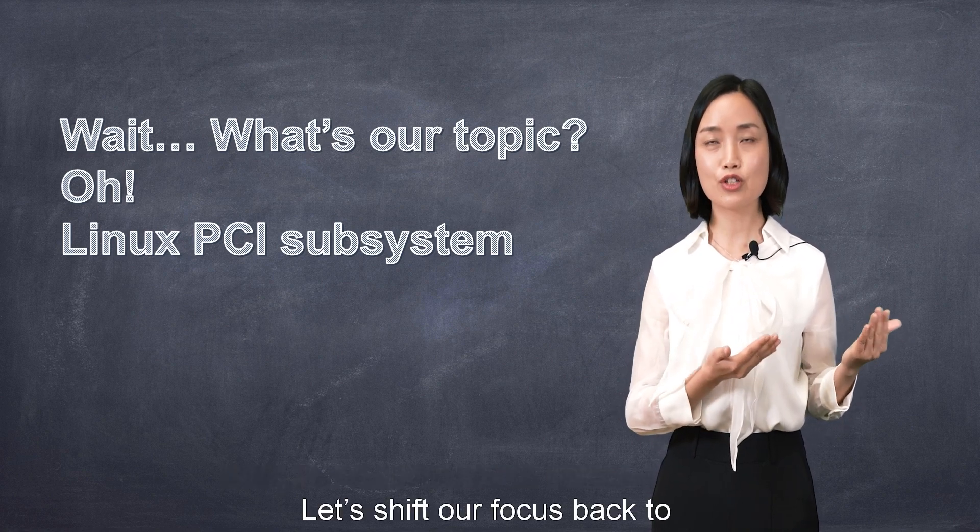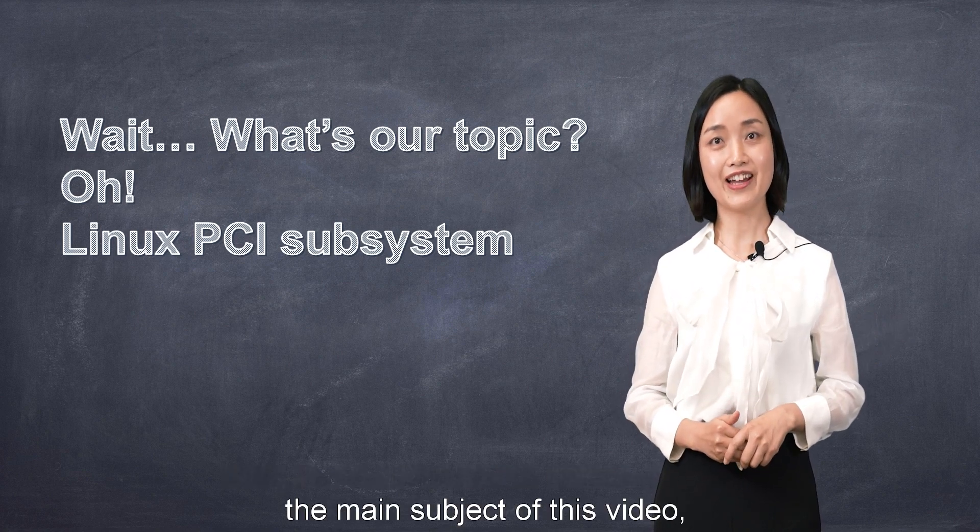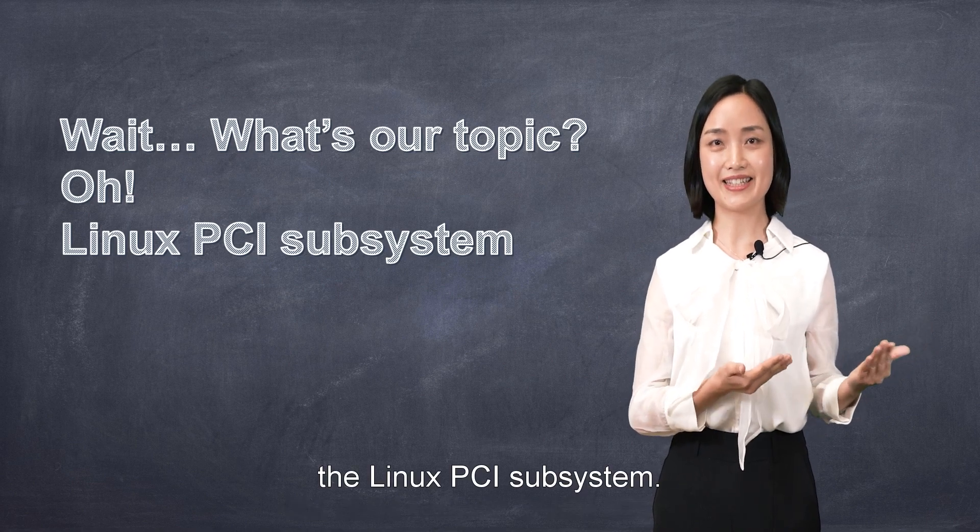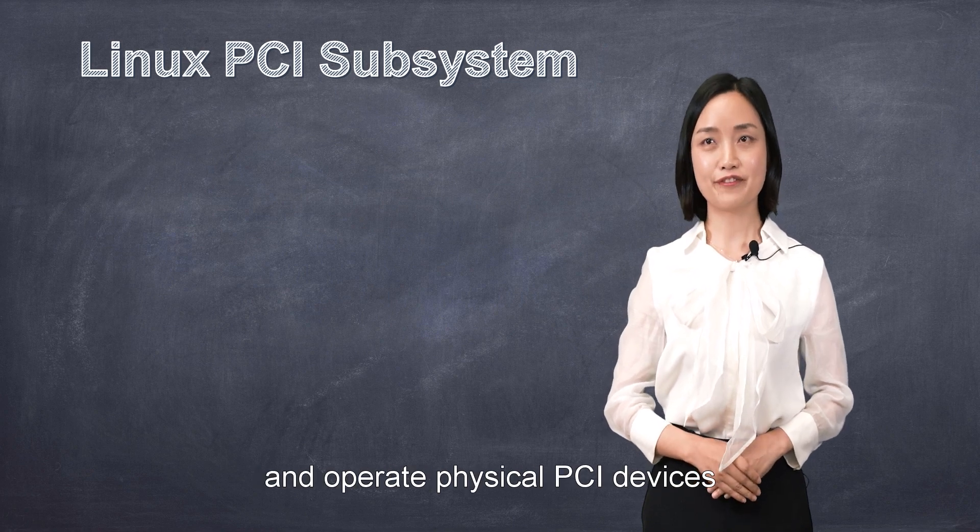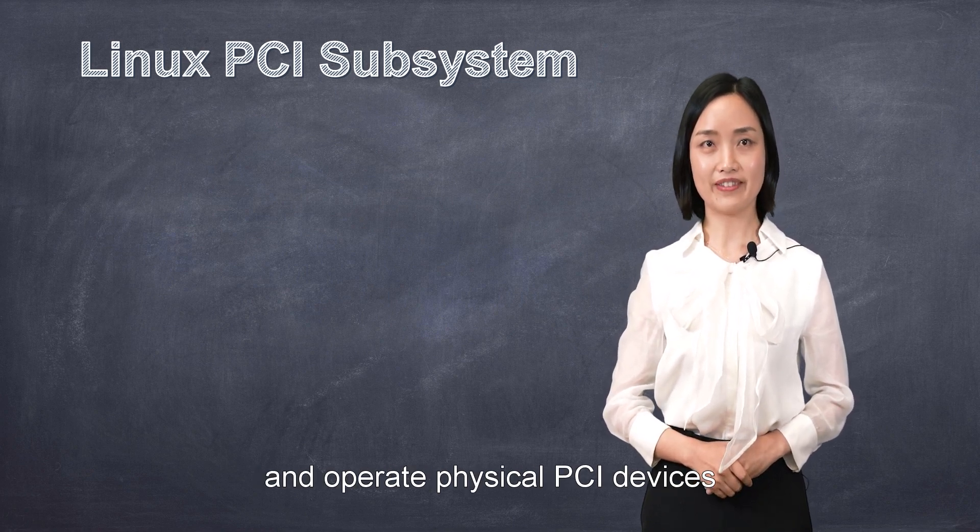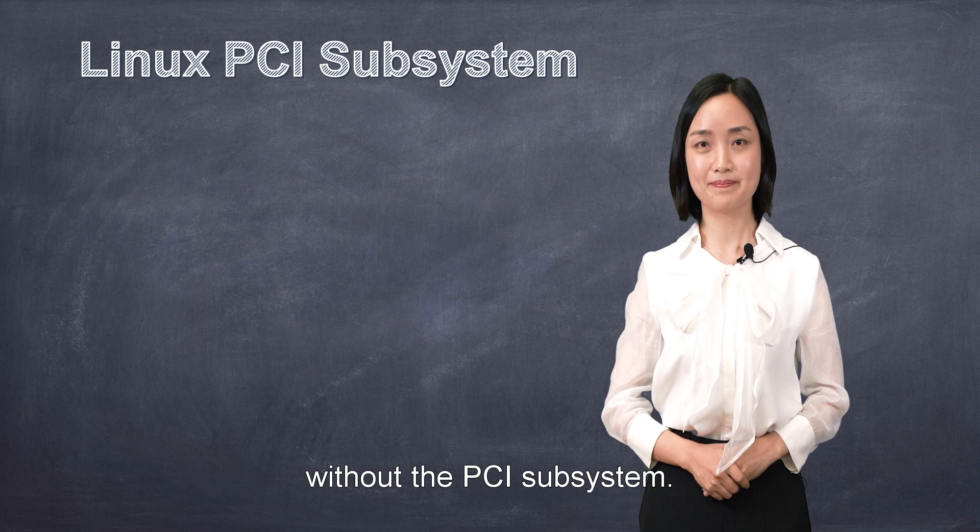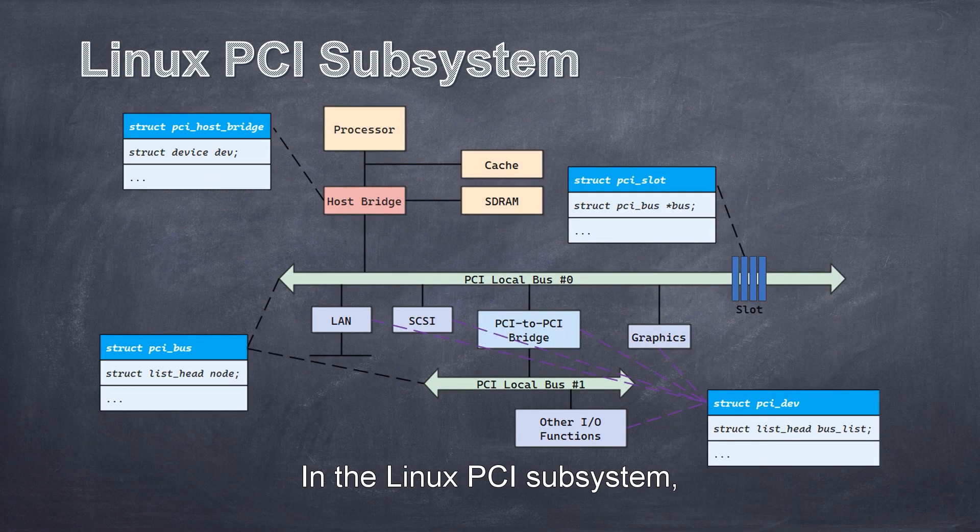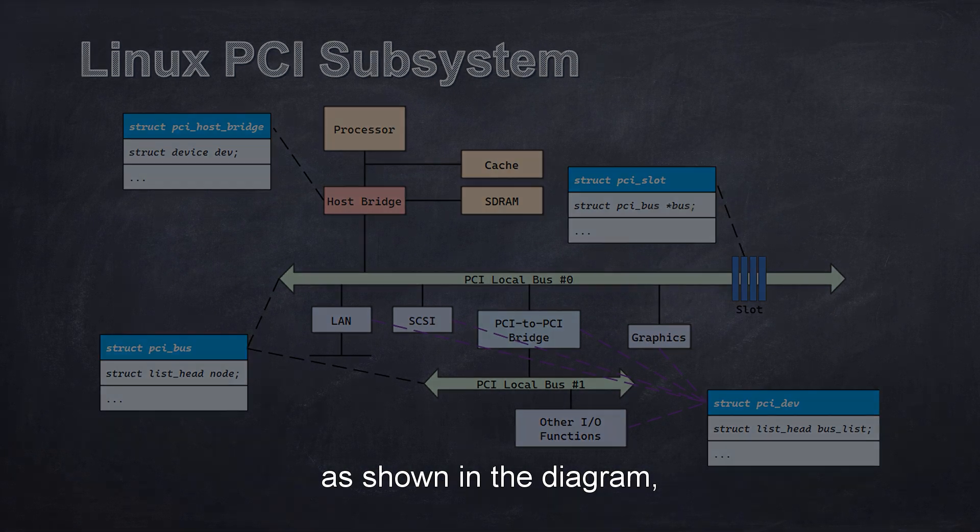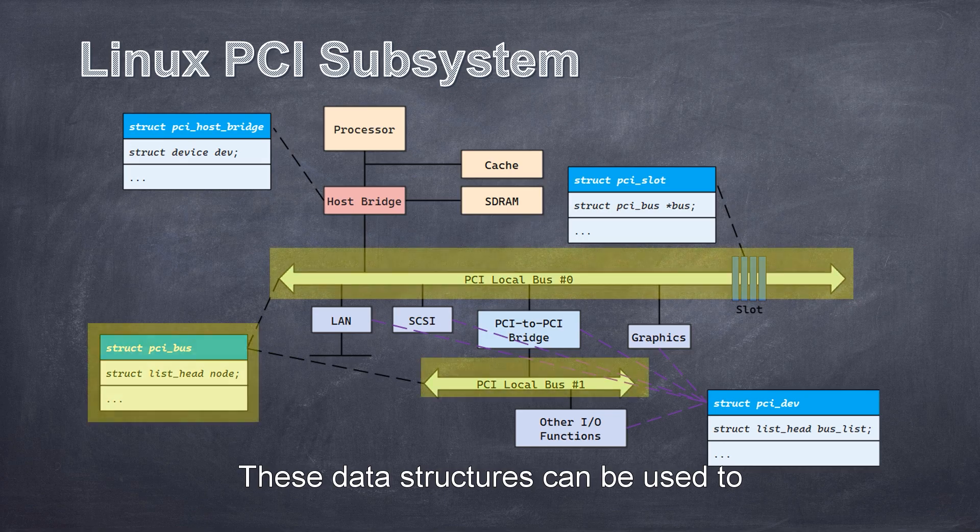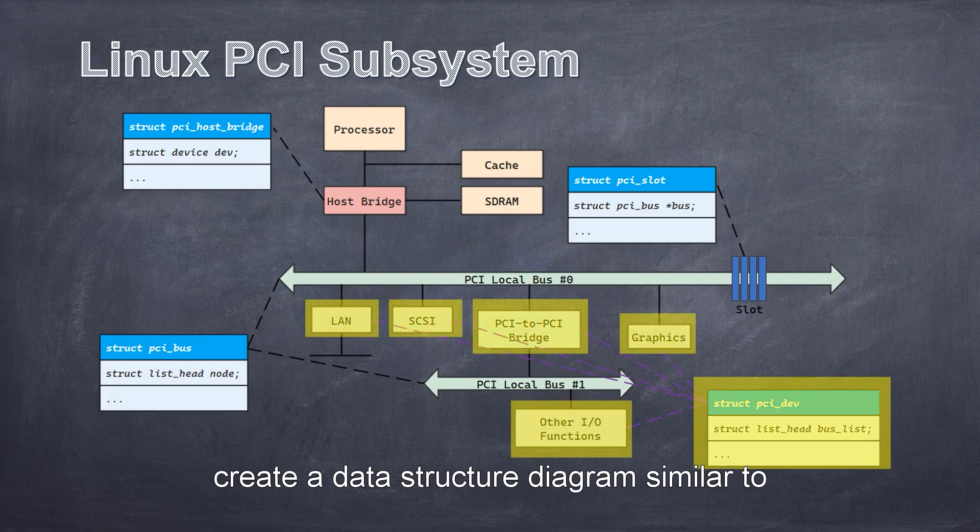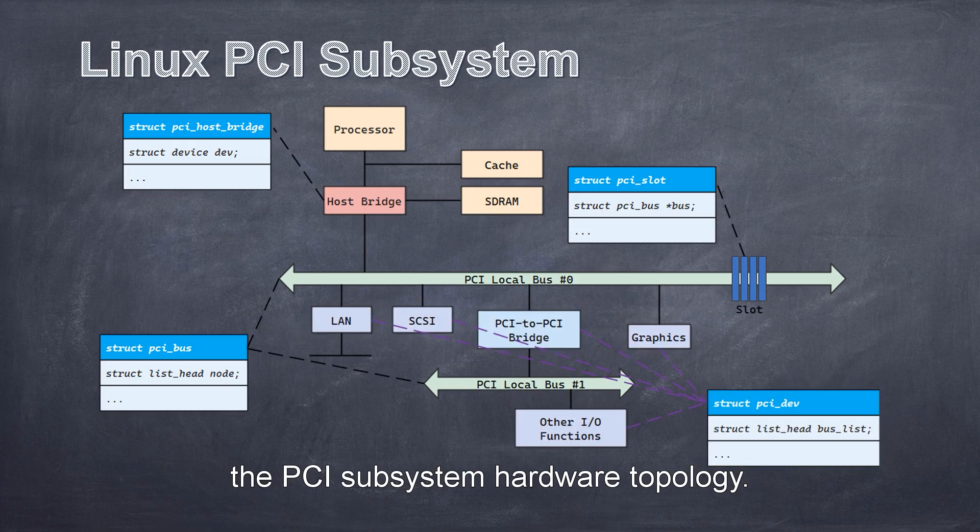Let's shift our focus back to the main subject of this video, the Linux PCI subsystem. Linux wouldn't be able to recognize and operate physical PCI devices without the PCI subsystem. In the Linux PCI subsystem, as shown in the diagram, each PCI component or device is described by a data structure. These data structures can be used to create a data structure diagram similar to the PCI subsystem hardware topology.